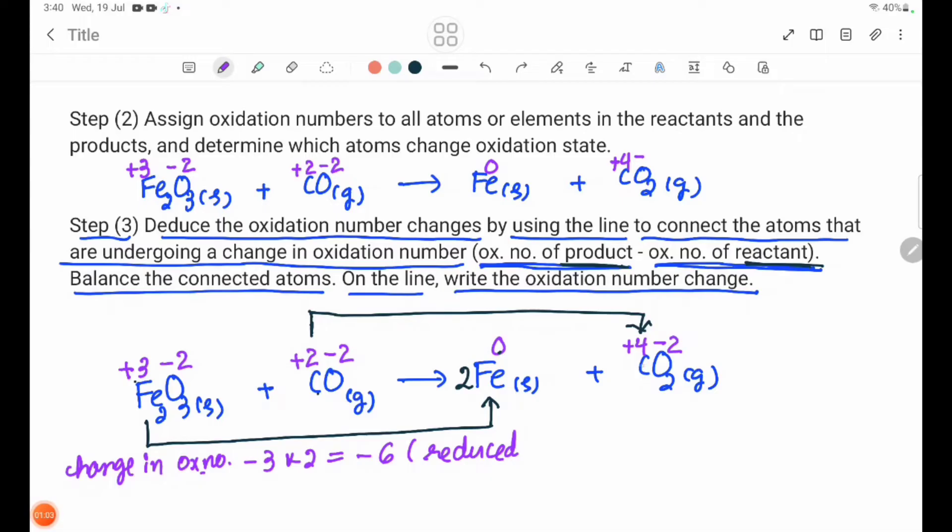Now we have carbon. The product is plus 4 and the reactant is plus 2. Change in oxidation number plus 2.